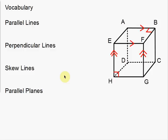In this video, I'm going to very quickly go over a couple of vocabulary words. Some of these you might already know, but it's always good to go over these, especially with the new notation that you're going to see. The four terms are parallel lines, perpendicular lines, skew lines, and parallel planes.